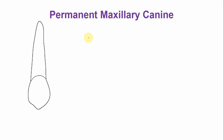This is the crown and root outline of the permanent maxillary canine. The tooth has a pulp chamber that is quite narrow compared to the central and lateral incisor, with a single pulp horn and a single pulp canal. The canal is quite wide in the cervical and middle root area, and in the apical portion it usually curves in a distal direction.